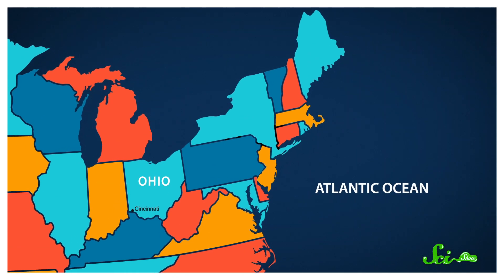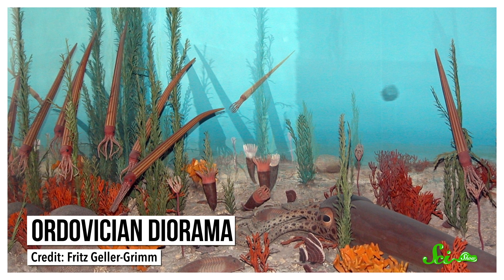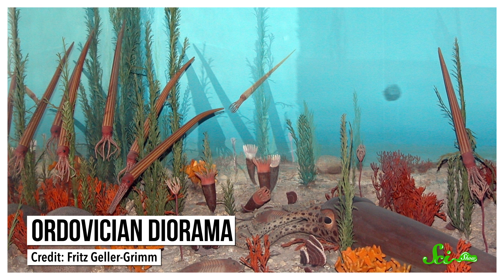Today, of course, Ohio is more than 600 kilometers from the Atlantic coast. But there, embedded in the rock, were the remains of an ancient ocean full of invertebrates like corals and starfish.